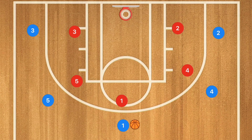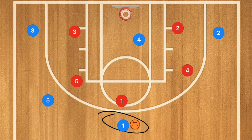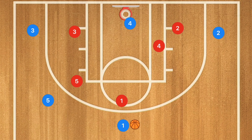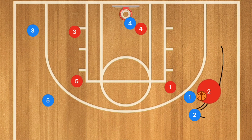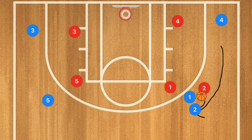This next play works against a zone defense as well as man-to-man. Player one calls out this play — you can name it whatever you'd like. Player four cuts towards the rim and stays under or just in front of the basket for one to two seconds. Then player two runs up and player one dribbles towards player two for a simple dribble handoff, while player four clears out of the key.